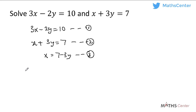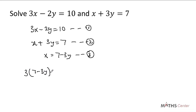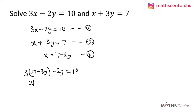When we do that we are going to have 3 times (7 minus 3y). Since 7 minus 3y is a binomial, I have to put it in a bracket. So we have 3(7 minus 3y) minus 2y equals 10. Expanding the bracket: 3 times 7 gives 21, and 3 times negative 3y gives negative 9y. So we have 21 minus 9y minus 2y equals 10.